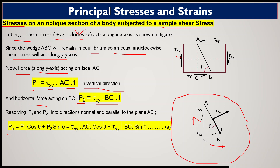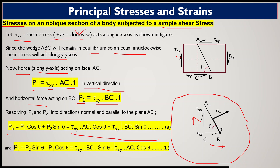Equation A gives the force acting normal to plane AB due to the simple shear stress tau_xy acting on the body faces. Similarly, the tangential force Pt (along plane AB) is given by Pt = P2·sin(theta) − P1·cos(theta). Substituting P1 and P2 into this equation gives equation B for the force acting tangentially to plane AB.